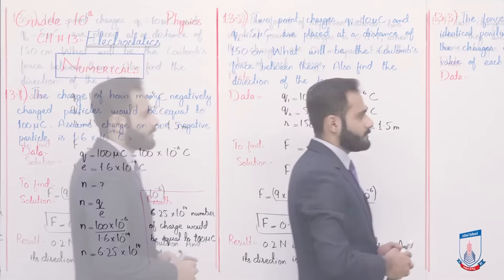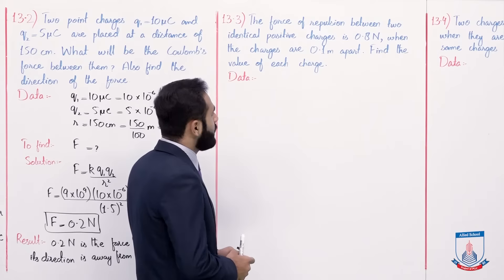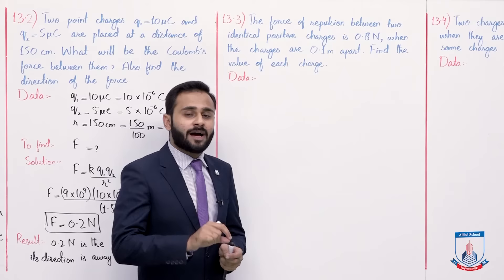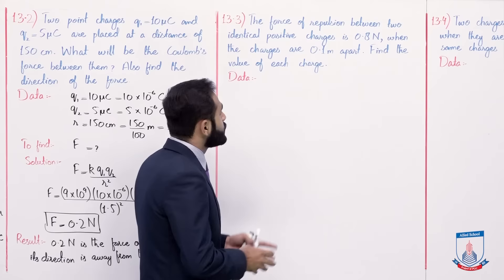Numerical 13.3. The force of repulsion between two identical positive charges is 0.8 newton when the charges are 0.1 meter apart. Find the value of each charge. Identical mean ki dono charges same hai, aur unke darmiyaan jo force of repulsion hai that is 0.8 newton, when the charges are 0.1 meter apart. So find the value of each charge.